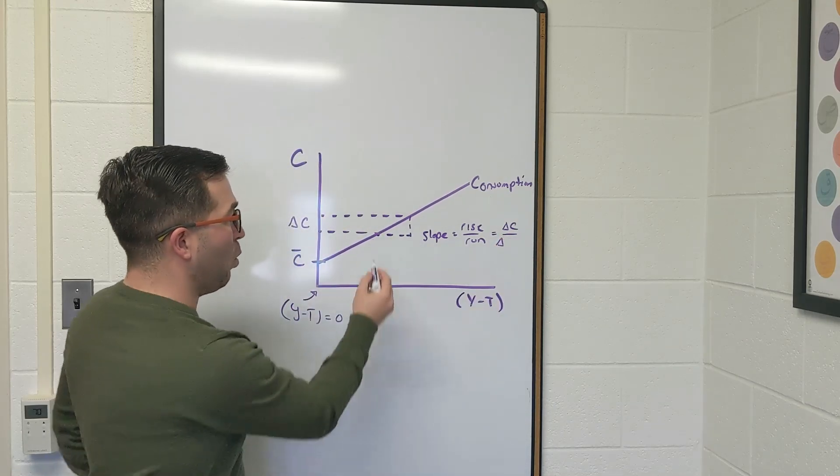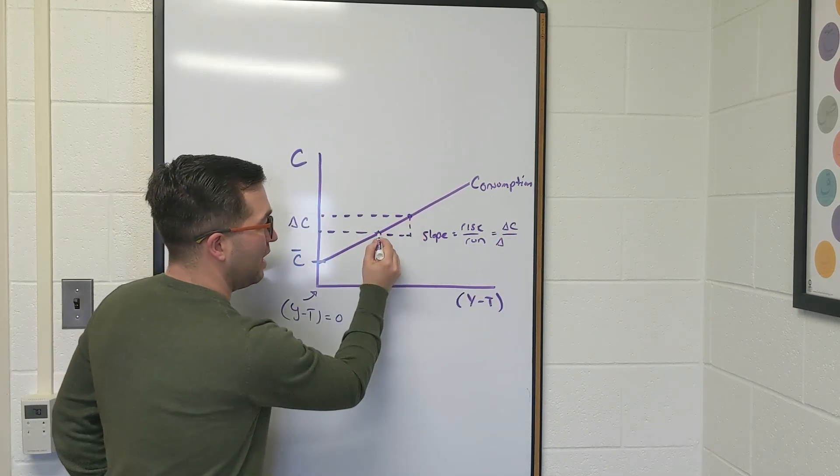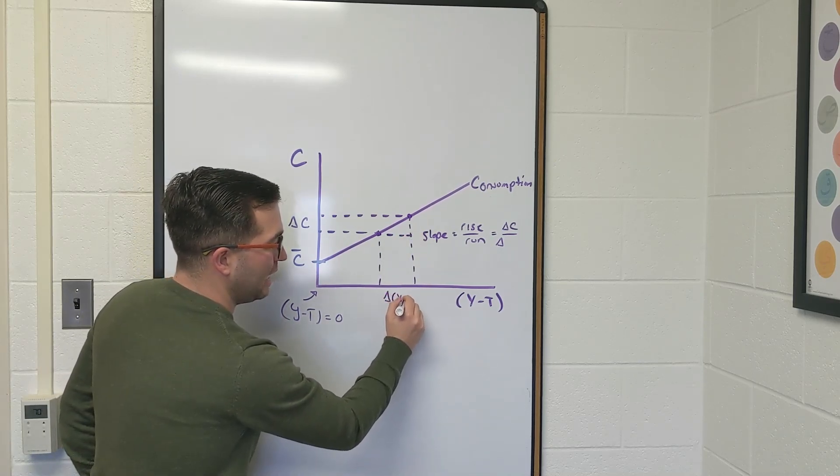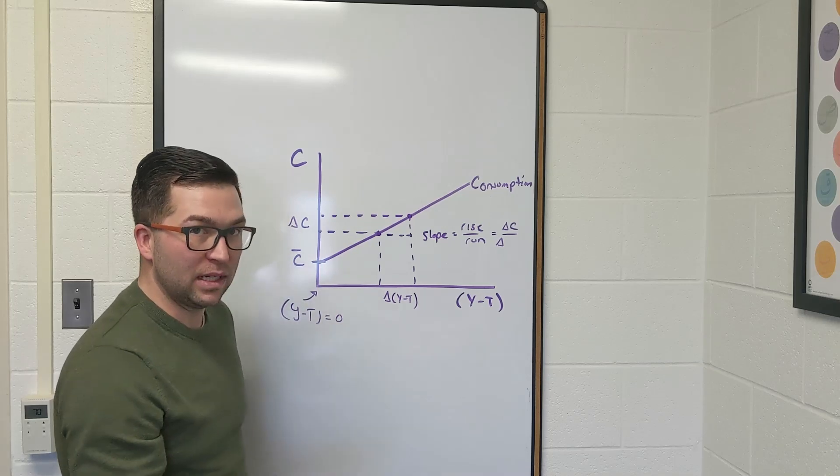How much am I changing going from one point to another? When I go from here to here, I see another type of change. I see a change in disposable income.